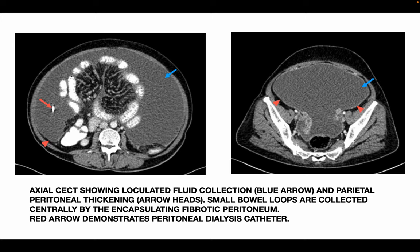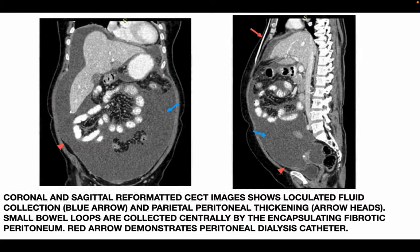This is a case of a 58-year-old female patient on long-term peritoneal dialysis who presented with abdominal pain and distension. Axial CCT shows loculated fluid collection (blue arrow), parietal peritoneal thickening (arrowhead), and small bowel loops collected centrally by the encapsulating fibrotic peritoneum; the red arrow demonstrates the peritoneal dialysis catheter. Coronal and sagittal reformatted images of the same patient confirm the loculated fluid collection, parietal peritoneal thickening, and centrally collected bowel loops.